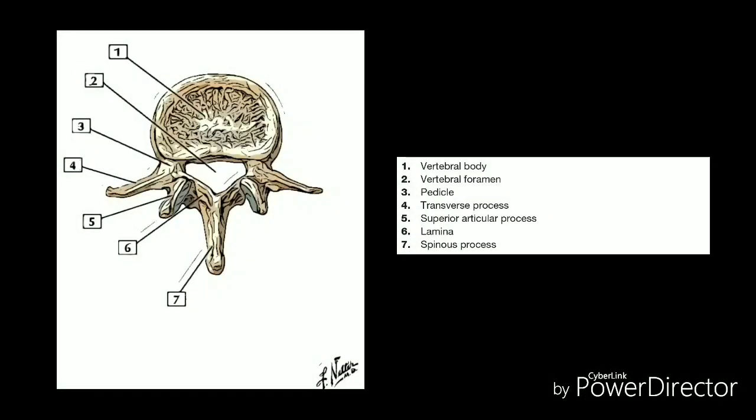The lumbar low back's main function is to bear the weight of the body. The five lumbar vertebrae are numbered L1 to L5. These vertebrae are much larger in size to absorb the stress of lifting and carrying heavy objects.